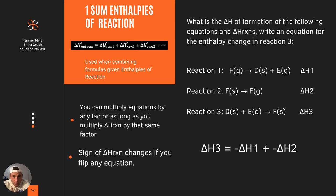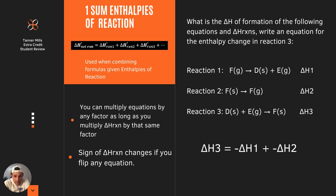The first example we'll go over is the sum of enthalpies of reaction, which is used when combining formulas with given enthalpies of reaction. In any problem you're given, it's common to have a goal equation — something you're developing from other equations by summating different equations to give one net equation. There are a couple of rules: you can multiply equations by any factor as long as you multiply the delta H of reaction by that same factor.